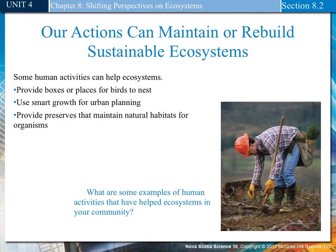Our actions can maintain or rebuild sustainable ecosystems. Some human activities that help include providing boxes or places for birds to nest, using smart growth for urban planning, and providing preserves that maintain natural habitats for organisms. Examples in our community include responsible waste disposal, reforestation after clear cuts, and preservation of habitats such as Kedjimkujik Park. Our island is also a biosphere reserve, so there are many places in our local area that are maintaining and rebuilding sustainable ecosystems.